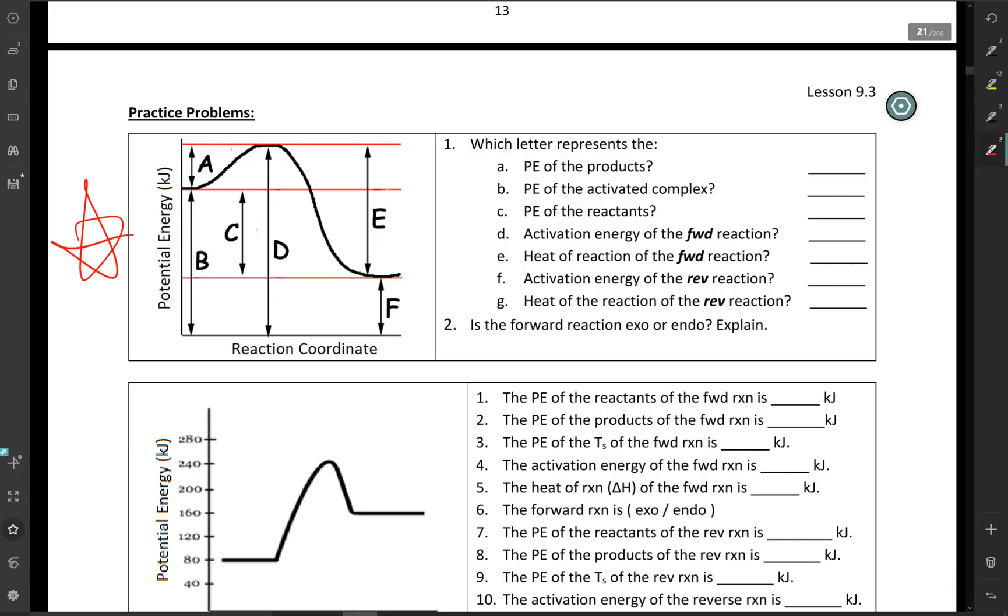So question 1A, which letter represents the PE of the products? Well, I know that this is the PE, the product side over here. I'm just going to write that, products. So, okay, letter F represents the potential energy of the products.